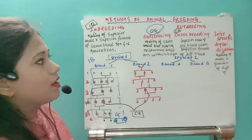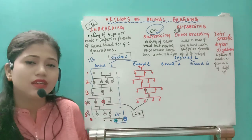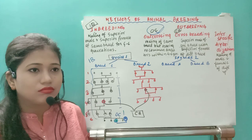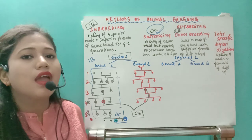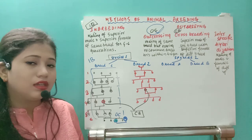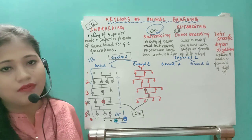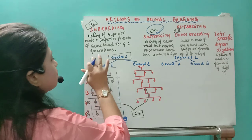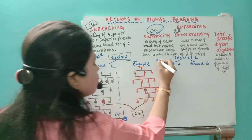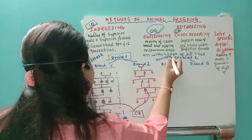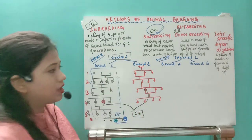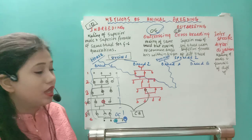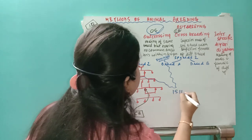Interspecific hybridization is possible between species that separated relatively recently in evolutionary time. The male and female of different species are bred. For example, horse crossed with donkey, or tiger crossed with lion. These are examples of interspecific hybridization.